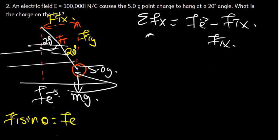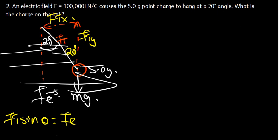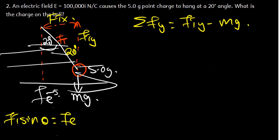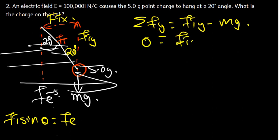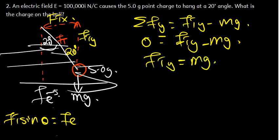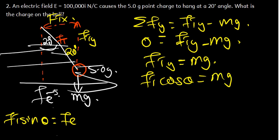Now let's talk about the forces in the y-direction. The summation of all forces in y: we have FTY pointing upward minus mg. With no acceleration, this equals zero, so FTY equals mg. According to SOHCAHTOA, FTY equals FT·cosθ. Therefore, FT·cosθ equals mg. This is Equation 2.